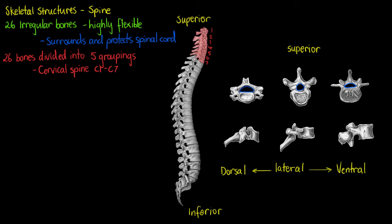Those seven are our cervical spine bones. The cervical spine extends from the base of our skull to the base of our neck, and as such these will be the bones supporting your head and neck. The cervical spine also includes a couple of unique bones — the C1 and C2, so the first two of those bones — which we will talk about in the cervical spine video.